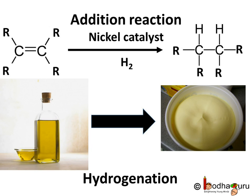In presence of catalysts, hydrogen is added to unsaturated hydrocarbons to make them saturated hydrocarbons. This process is used to produce margarine from vegetable oil. Oil is an unsaturated compound which has long chains of carbon with many double bonds. In this process, hydrogen is added to satisfy carbon valency with single bonds only. This process is called hydrogenation.